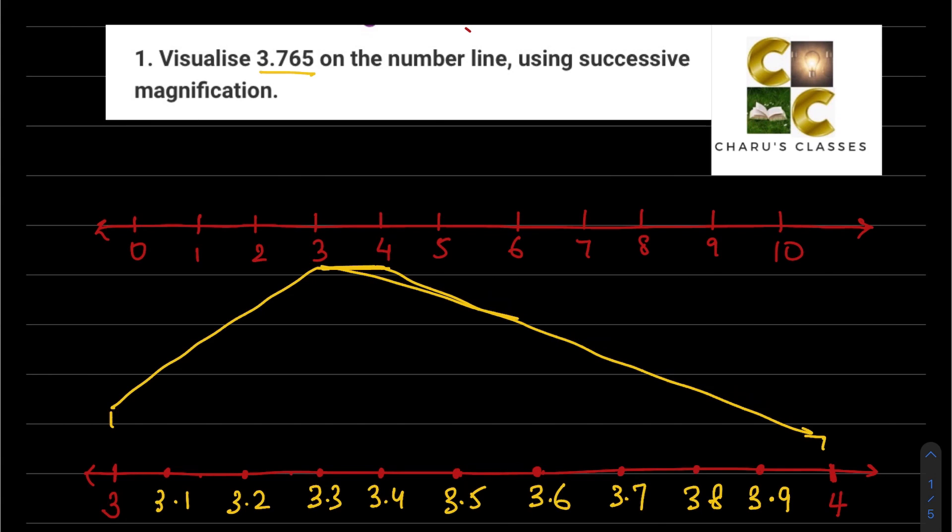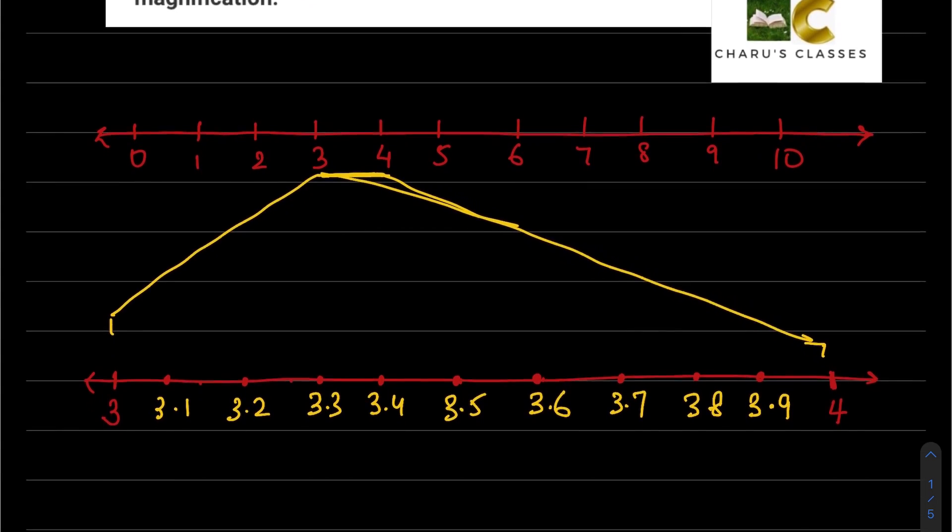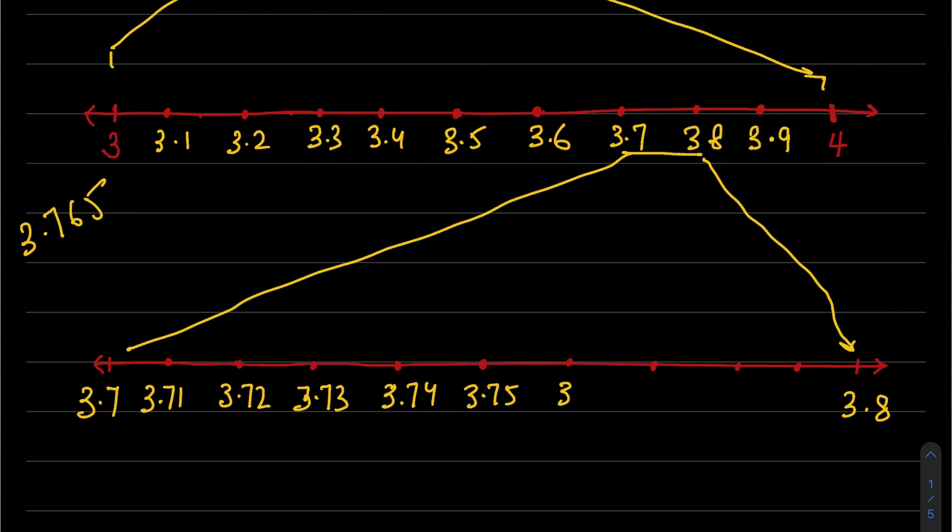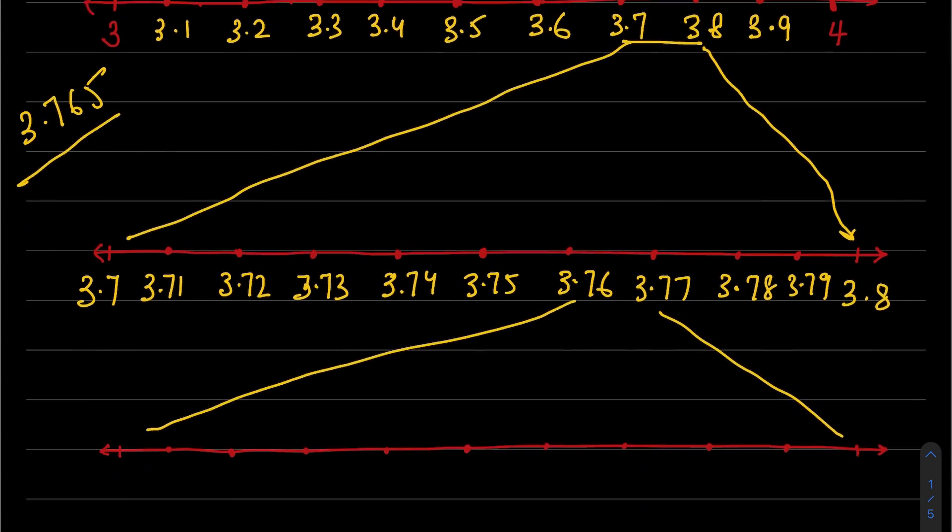So this number 3.765 will be between 3.7 and 3.8. Now I will magnify this portion, 3.7 and 3.8. Between 3.7 and 3.8, the numbers will be 3.70, 3.71, 3.72, 3.73, 3.74, 3.75, 3.76, 3.77, and 3.78. So 3.765 will be between 3.76 and 3.77.